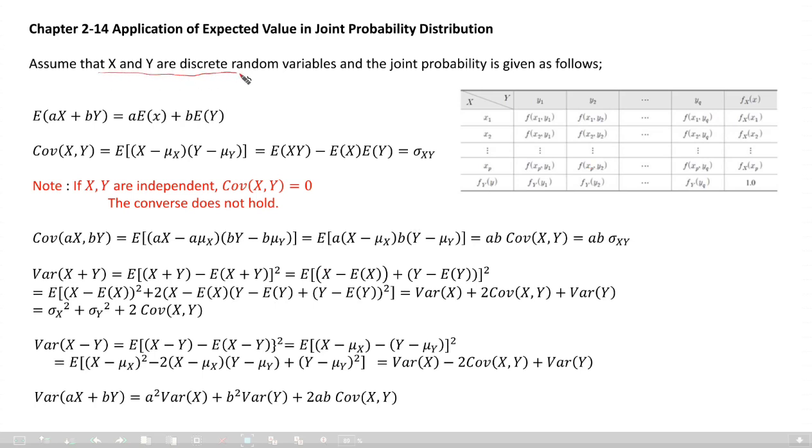Assume X and Y are discrete random variables and the joint probability is given as follows like this in the table. X takes p many values, x1 up to xp. Y takes q many Y values. Both of them are discrete. Then there exists probability for x1, y1, x1, y2, x1, yq and xp, yq. And these are marginal probability of X. These are marginal probability of Y.